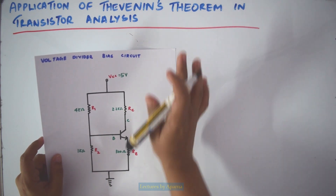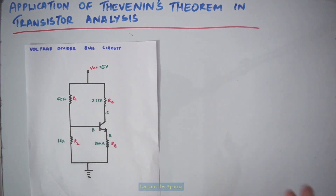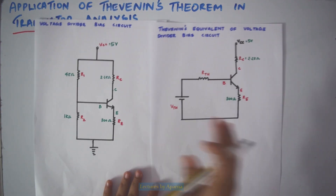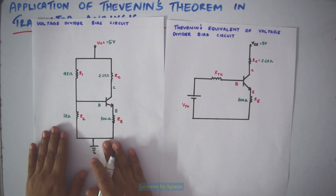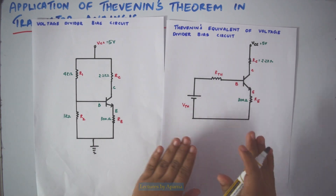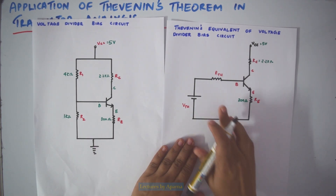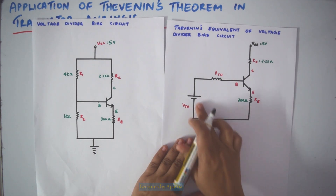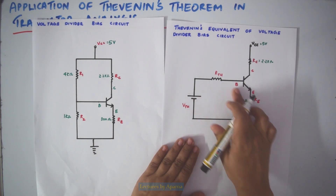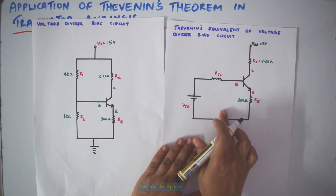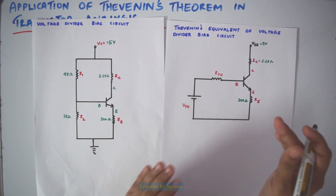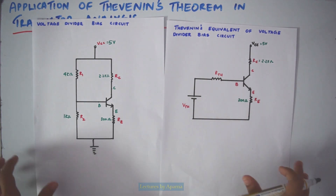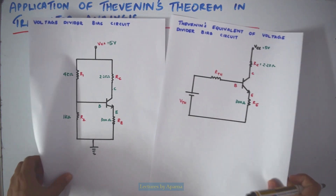The usual way of simplifying it is to make the circuit like this, so that on the input side it will be easier to analyze. Let's see what Thevenin's theorem says.